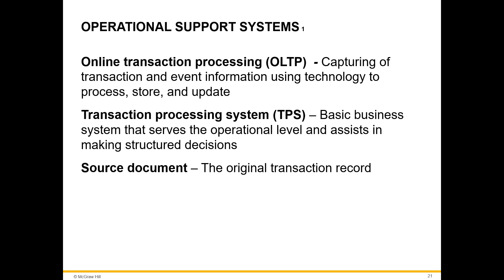Transactional information includes all information contained within a business process, and its primary purpose is to support the daily operation of a business. Managers use transactional information when making structured decisions, such as how much inventory to carry. Online transaction processing, OLTP, is the capture of transaction and event information using technology. A transaction processing system, TPS, is the basic business system that serves the operational level and assists in making structured decisions. The most common type of TPS is an accounting system, such as a payroll system.